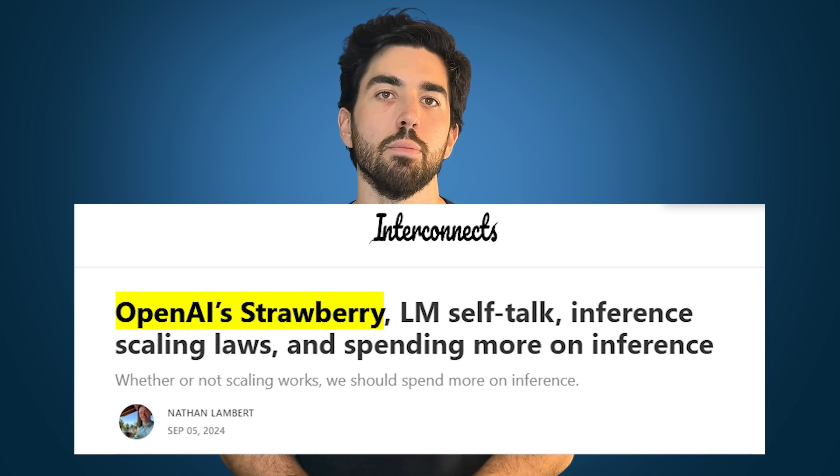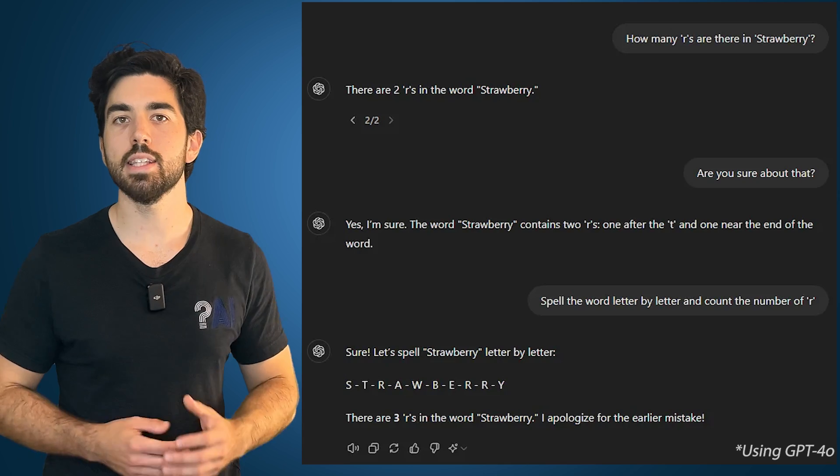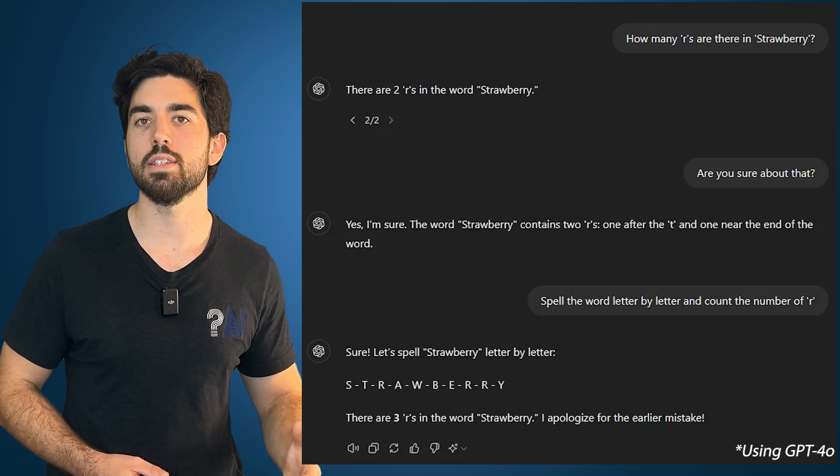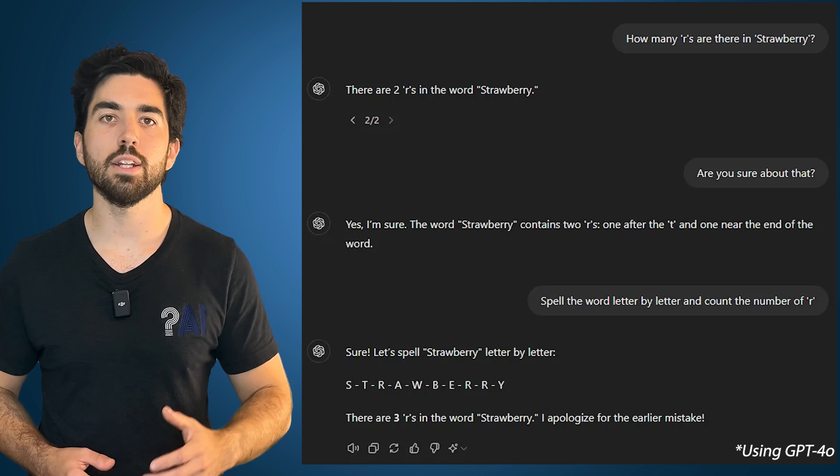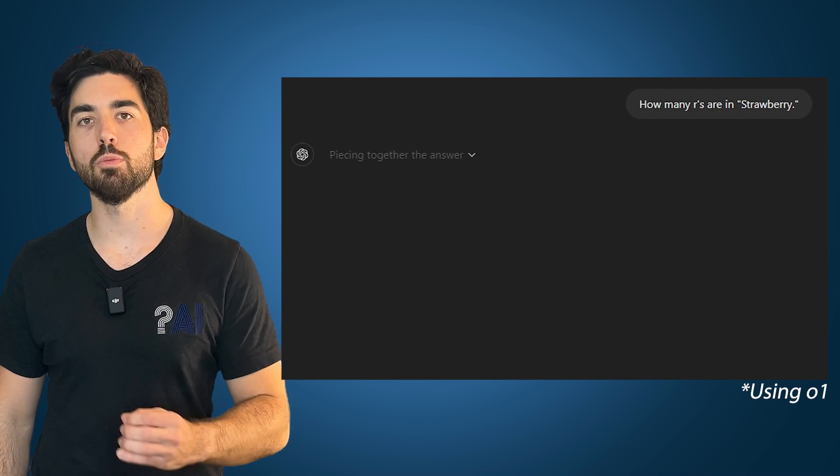You might have heard people referring to something called the strawberry model, which is actually just a code name for O1 in some circles. The reason it's called strawberry is a bit of an inside joke because of the number of Rs in the word strawberry, which kind of ties into the idea of complex reasoning. Just like how it's tricky to count the Rs in strawberry for a model, it's tricky to get the right reasoning steps every time. But O1 makes this process much more efficient.